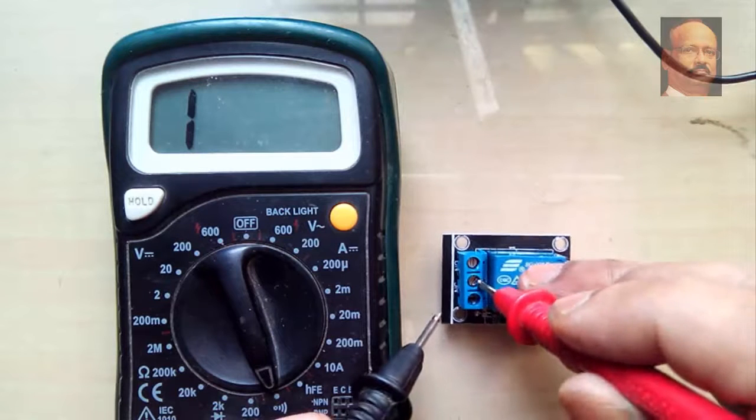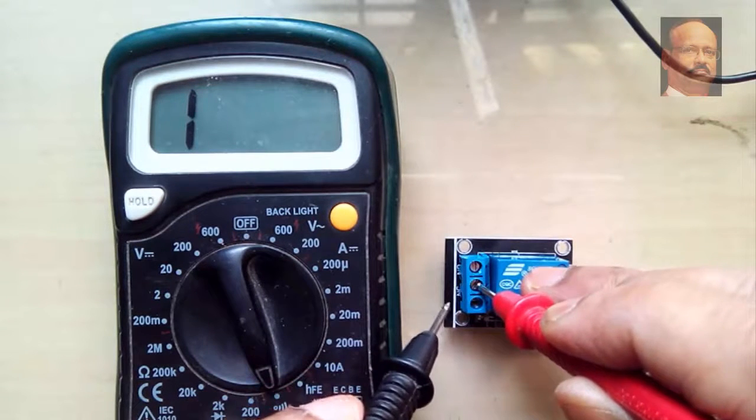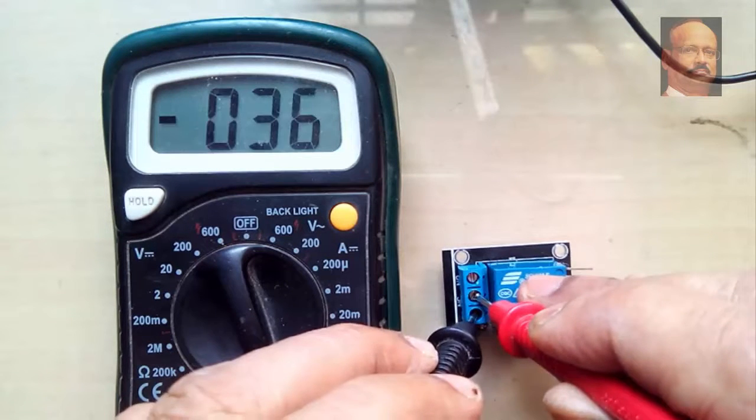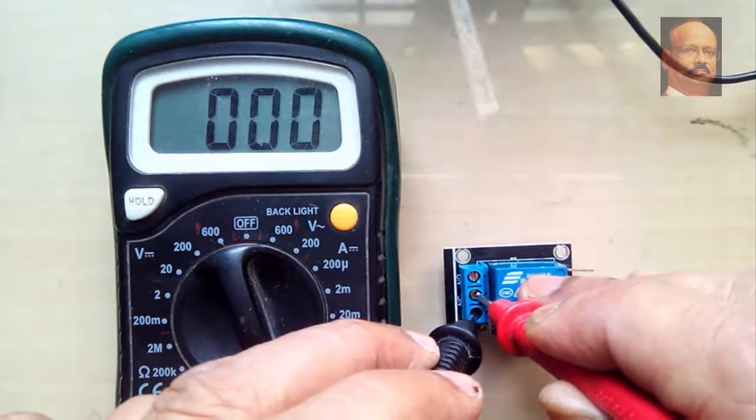Now this is usually the common point, it is written here common also. Now from here to here, if we put the buzzer sound, that means this is the NC point, this is normally closed.